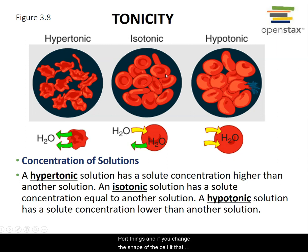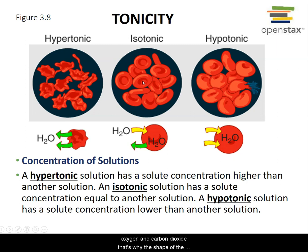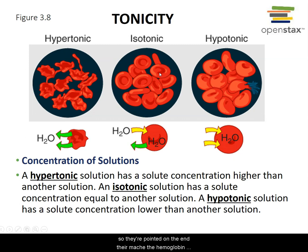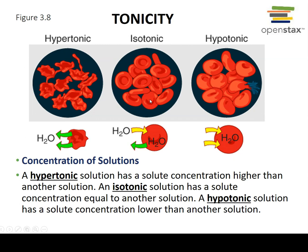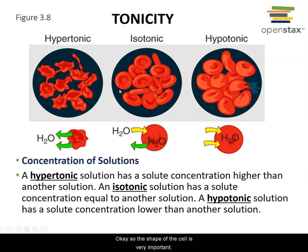If you change the shape of the red blood cell, the hemoglobin no longer behaves correctly and loses the ability to carry oxygen and carbon dioxide. For example, in sickle cell anemia, cells are sickle-shaped with pointed ends — the hemoglobin is misshapen and unable to carry oxygen to tissues. The pointed shape also causes clotting and sticking to the inside of vessels, making it a serious condition.